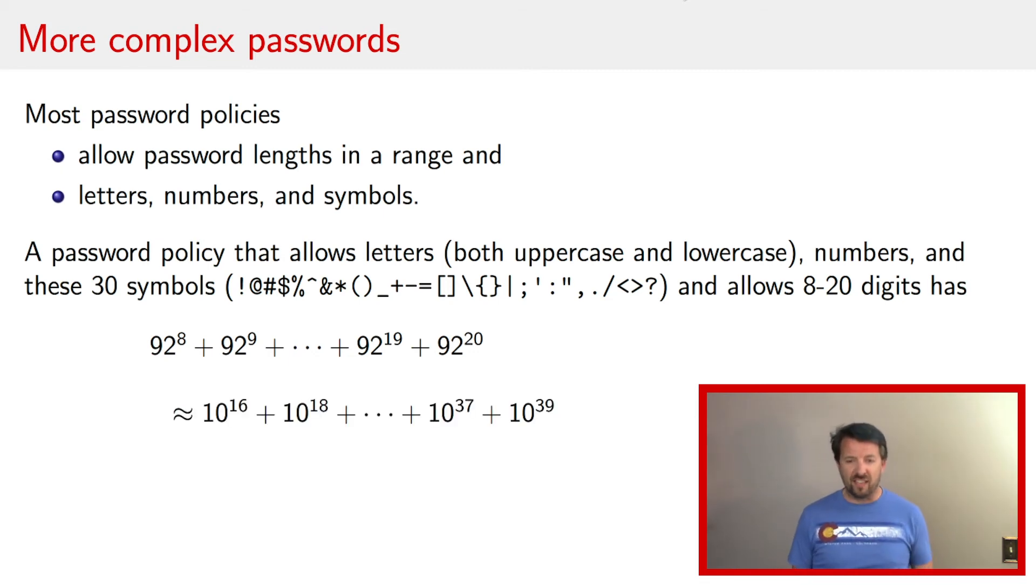Now, if you write this in base 10, here we have 10 to the 16th plus 10 to the 18th plus and so on, until we get to 10 to the 37th plus 10 to the 39th. But if you think about this, the 10 to the 39th is 100 times bigger than the 10 to the 37th. Or said another way, that 10 to the 37th is only adding 1% more passwords. And if you work back, you'll find that the next lower, like the number of passwords at length 18, right, is about 100 times smaller again. And so this sum right here can be approximated to a first degree by just saying, taking the number of passwords of length 20, that is 10 to the 39th power. And that will be approximately now how many passwords you have in this policy as a whole.